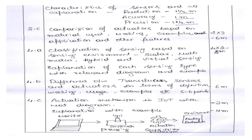For 3C, comparing different actuators: make sure you compare at least four to five criteria with features. Comparing four to five criteria across actuators earns six marks. For 4A, classification of sensing based on sensing environment — types include scalar, hybrid, virtual, and multimedia. List and explain each classification with diagrams and examples for eight marks. 4B is difference between transducer, sensor, and actuators — five to six points earns six marks. 4C actuation mechanism: block diagram carries four marks and explanation of each block carries two marks, totalling six marks.